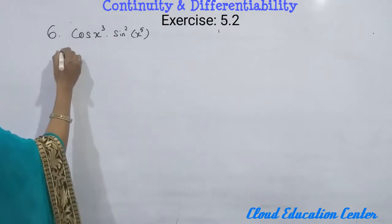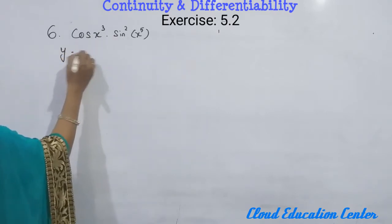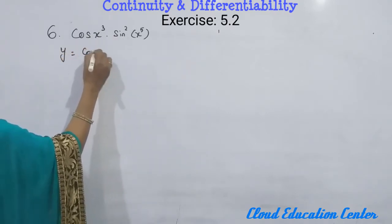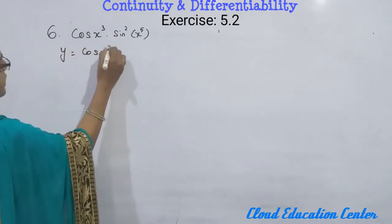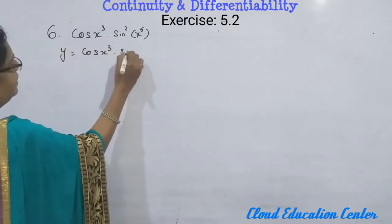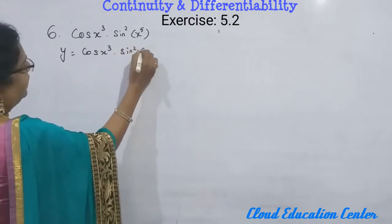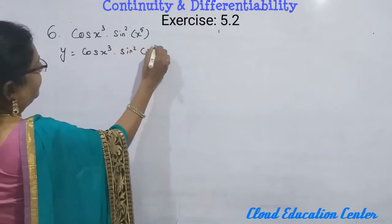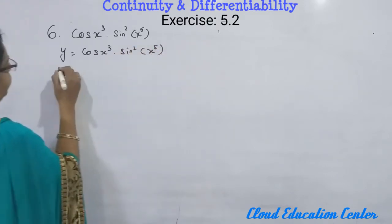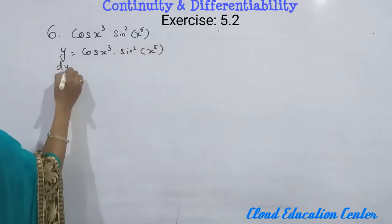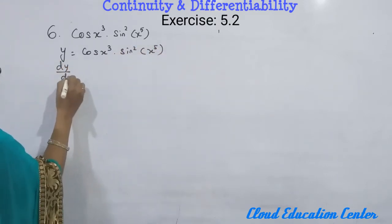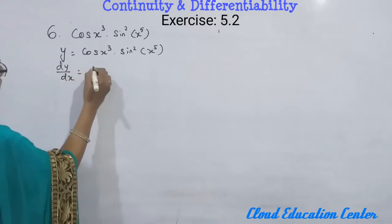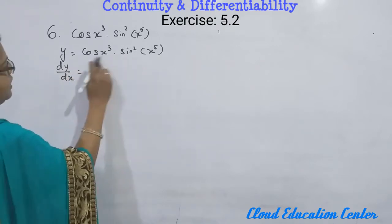We will take the entire thing as y. So y = cos(x³) into sin²(x⁵). We will differentiate — dy/dx equal to.